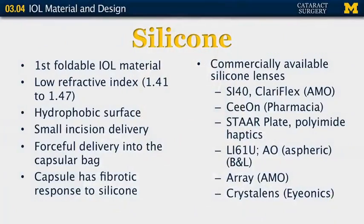There are several commonly used lens materials in use today. Silicone was actually the first foldable intraocular lens material available. It has a low refractive index, very close to the natural human lens. It is hydrophobic, so when you receive this lens in the operating room, you will open up the package and it is packaged dry. Silicone does tend to deliver rather forcefully into the capsular bag and opens quickly. In addition, the capsular bag has a rather fibrotic response to silicone, and you will see more posterior capsular opacification.